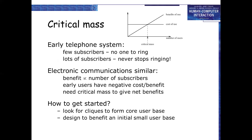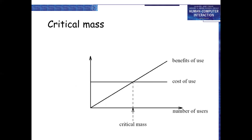Critical mass: early telephone systems had few subscribers so no one to ring; lots of subscribers means it never stops ringing. Electronic communication is similar — benefits are directly proportional to the number of subscribers. Early users have negative cost-to-benefit ratio; we need a critical mass to give net benefits. To get started, look for cliques to form a core user base, designed to benefit an initial smaller user base.